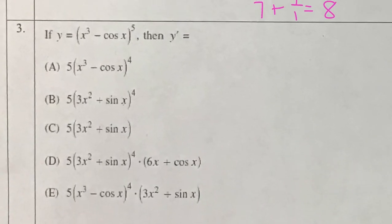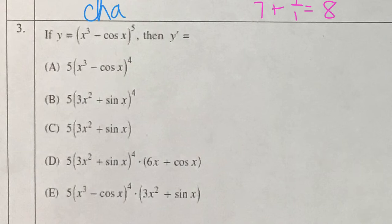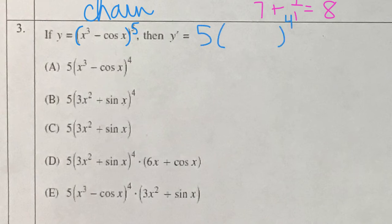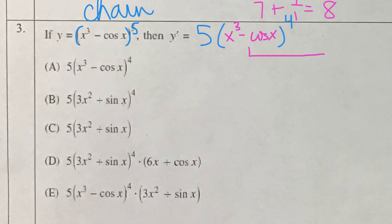Here we have a very strange-looking function — it is something raised to the 5th power. We're going to apply the chain rule. First, we take the derivative of the outside thing, which is a 5th degree polynomial: 5 times whatever that stuff is to the 4th power. We are not changing the inner thing yet — it stays as x cubed minus cosine x. Now we multiply by the derivative of our inner part.